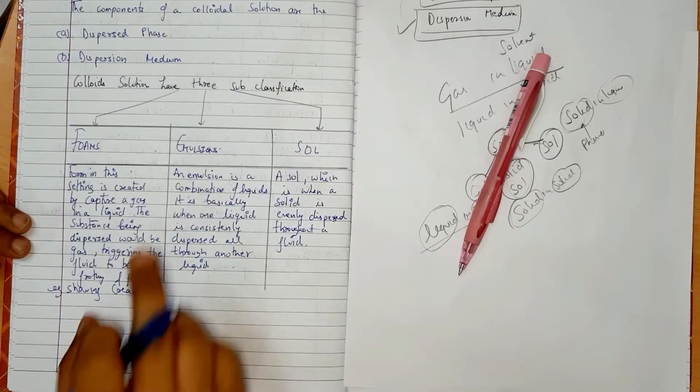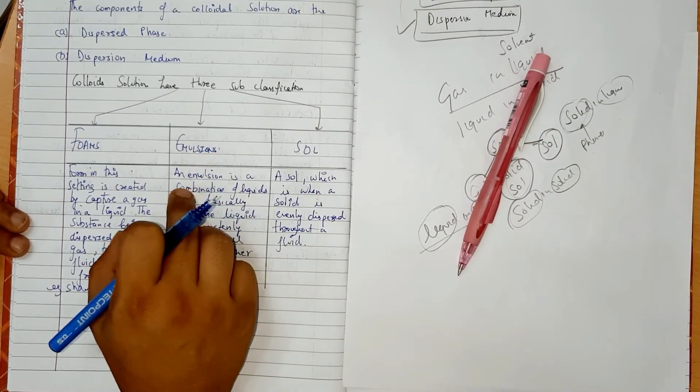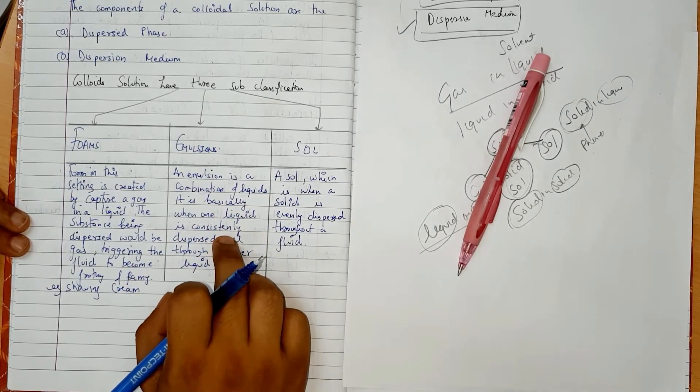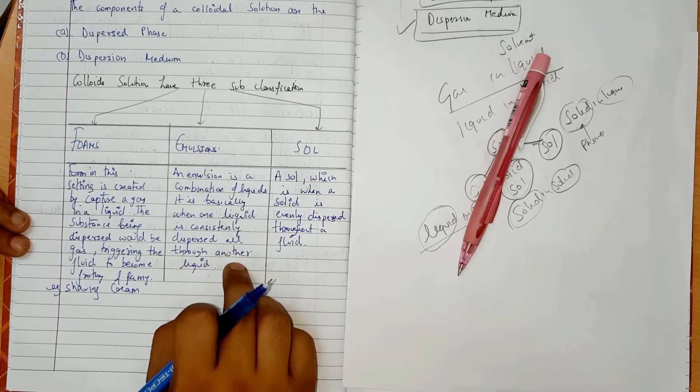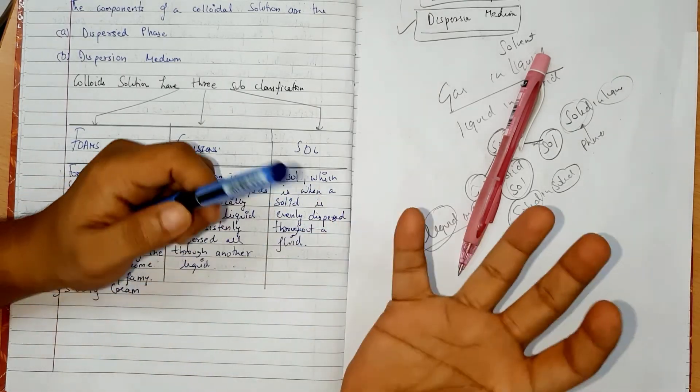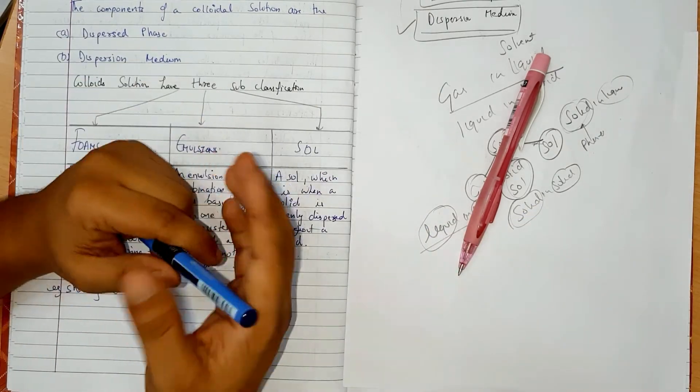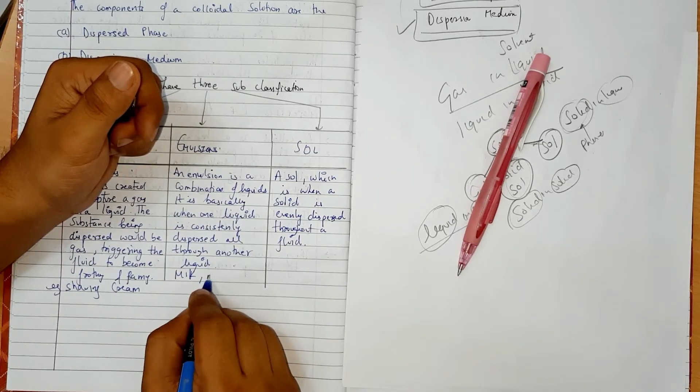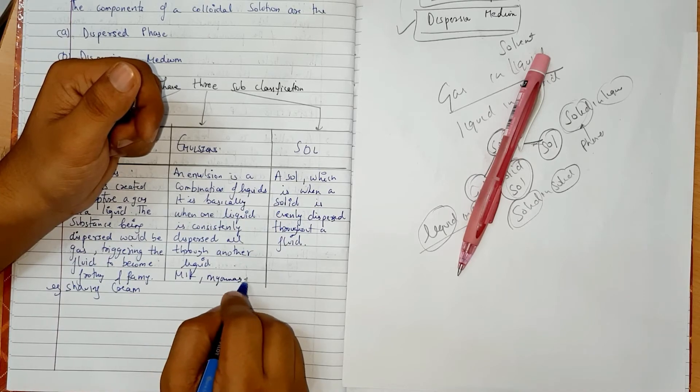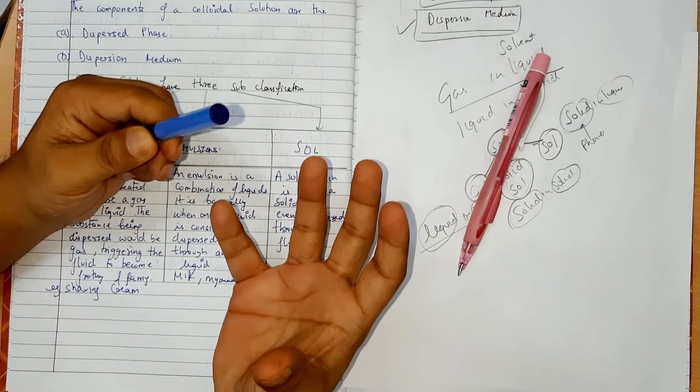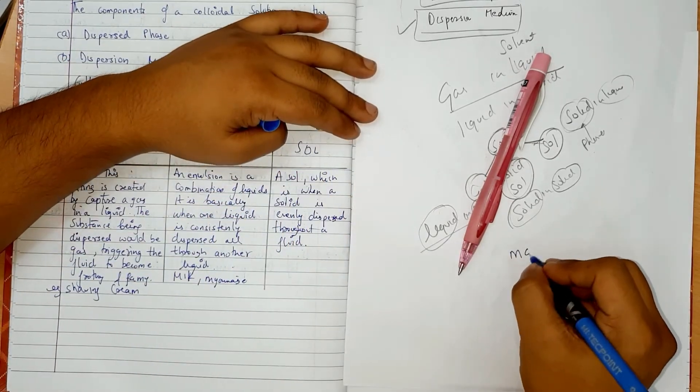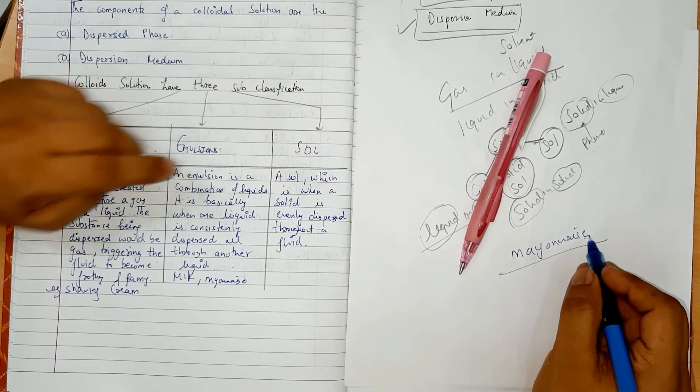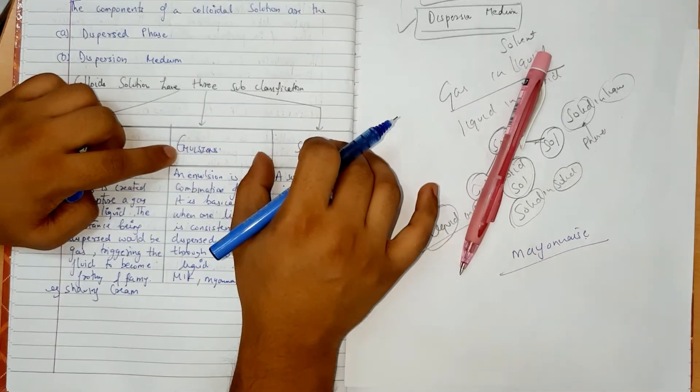Like shaving cream. Example here, shaving cream. What is emulsions? Emulsions is a combination of liquids. When one liquid is constantly dispersed all throughout another liquid. For example, milk or mayonnaise.